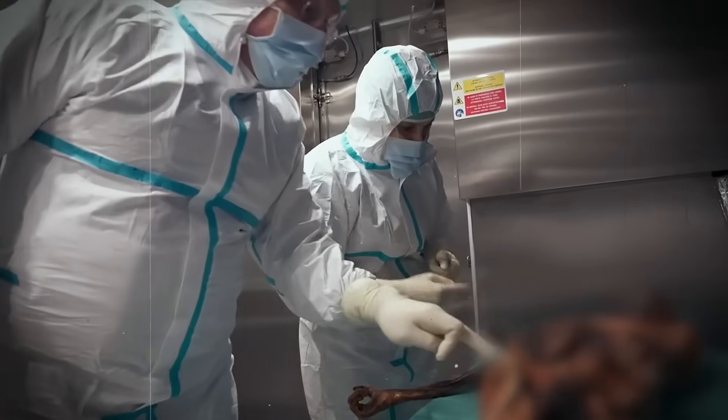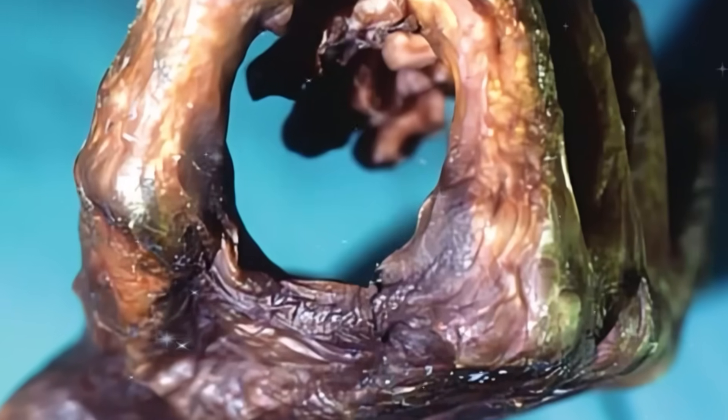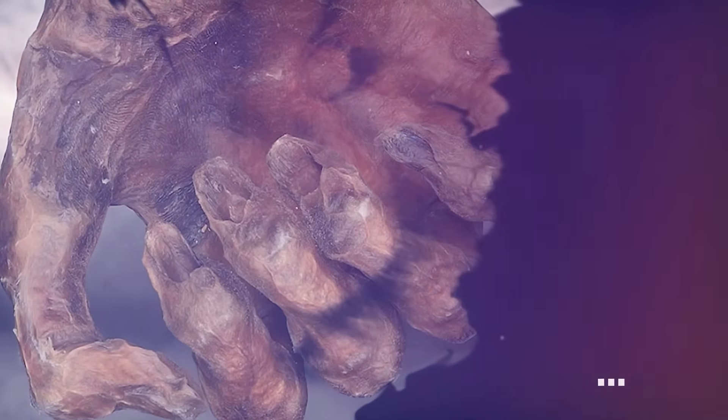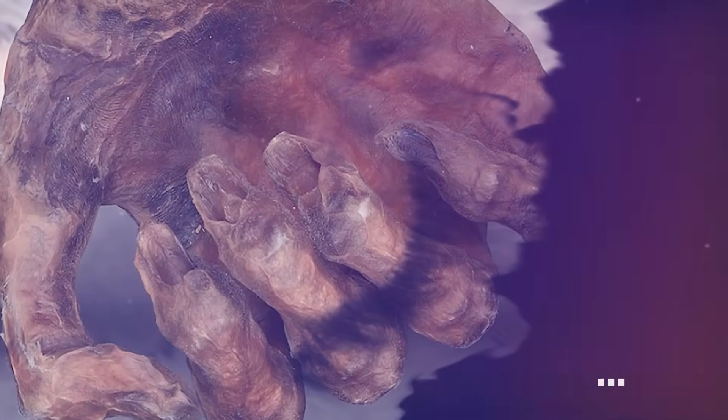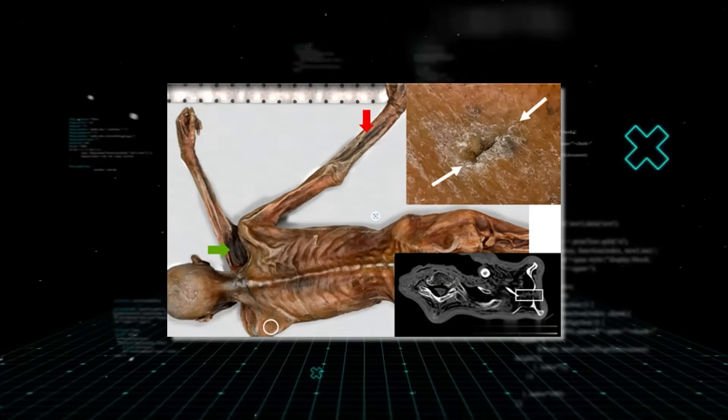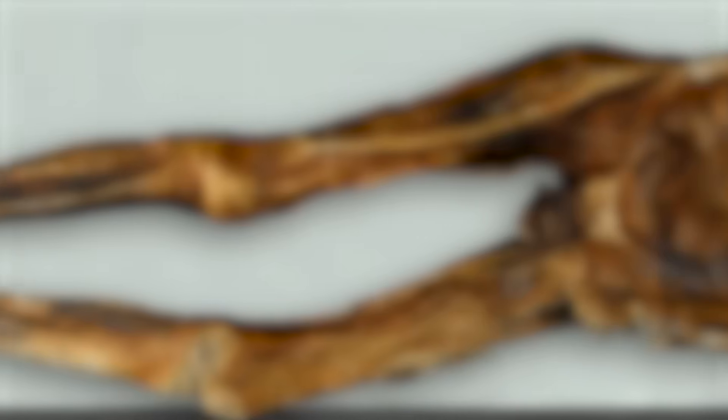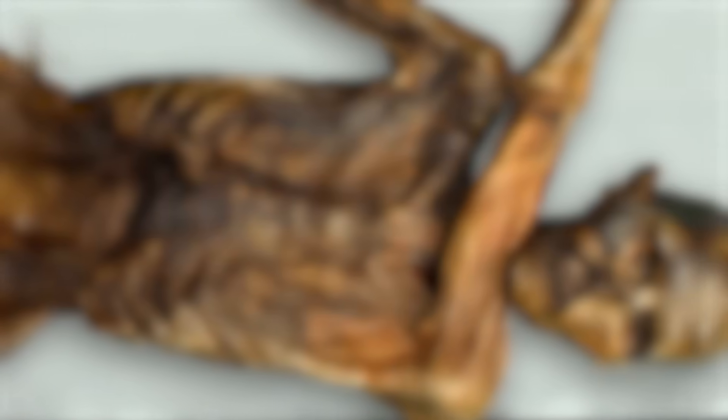But as scientists looked closer, a darker story emerged. His end was not peaceful. It was violent. His left hand had a deep defensive wound, showing he fought for his life. His ribs were bruised. The final blow, though, was an arrowhead lodged deep in his left shoulder. It had severed a major artery, and he would have bled out in minutes. This was a deliberate act.